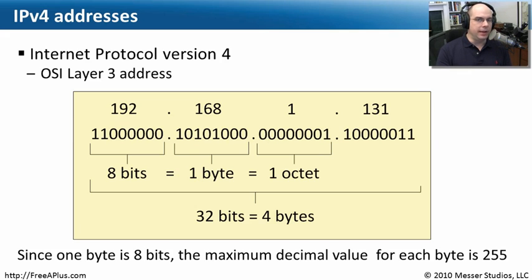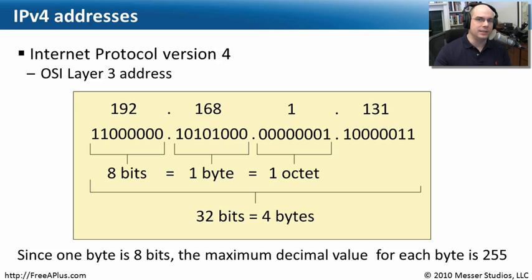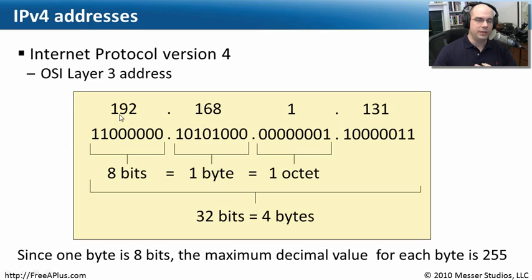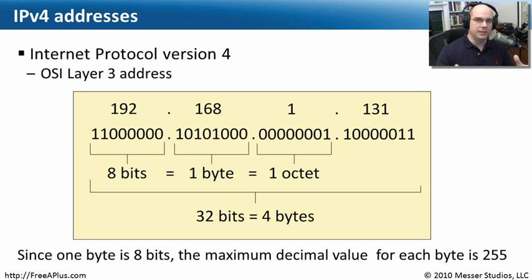IP stands for Internet Protocol. The primary version used over the internet is IPv4, and the newest version is IPv6. For the most part, almost everybody today uses IPv4. In the OSI model, IP sits at Layer 3. IPv4 has four octets represented in base 10 — for example, 192.168.1.131 or 10.1.3.7. These are numbers human beings can recognize. IP addresses are always in these groups of four — that's how IPv4 addressing works.